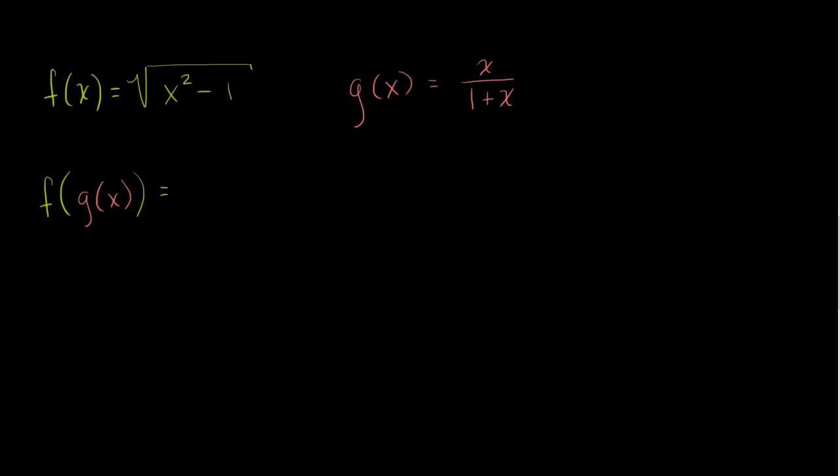So f of g of x is going to be equal to the square root of, well, instead of an x, we would write g of x. g of x squared minus 1.